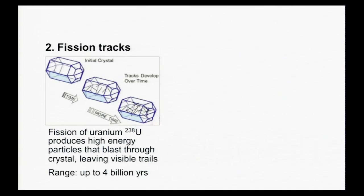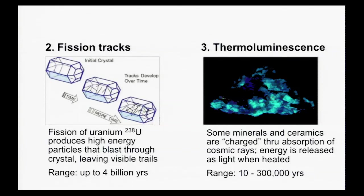At the other end of the spectrum, there's a technique called thermoluminescence, where certain minerals and ceramics — like teacups — are charged through the absorption of cosmic rays. These materials absorb the energy of cosmic rays, stored up like a battery. If you heat up the china cup properly, it will give off a certain amount of light. The amount of light given off for the heat you put in allows you to estimate the age of that teacup going back anywhere from just 10 years to 300,000 years.